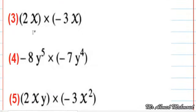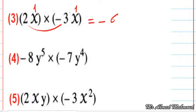Here we have 2x, which is x to the power of 1, and negative 3x, which is also x to the power of 1. We multiply 2 by negative 3 to get negative 6, and add the powers — x power 1 plus x power 1 equals x to the power of 2. We can add the powers because we have the same symbol x.